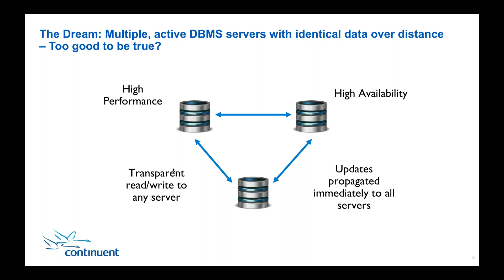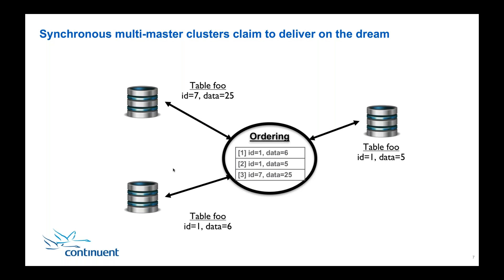We want to read and write to servers within the cluster without having to make changes to our application — that's key. If we start making changes to our application it makes everything more complicated, and ultimately makes it way more complicated to expand to multiple applications. Finally, we want all updates propagated across all servers as quickly as possible — not even half a second delay. There are also secondary goals like zero downtime and effective management of the whole system.